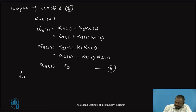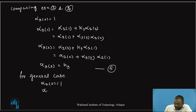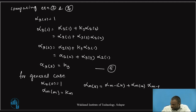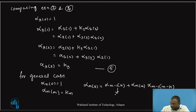For the general case: alpha_m(0) is equal to 1, alpha_m(m) is equal to k_m, and alpha_m(k) is equal to alpha_{m-1}(k) plus alpha_m(m) times alpha_{m-1}(m minus k). Let us call this equation number 6. These are the expressions to convert the m-stage lattice structure coefficients into m-stage direct form filter coefficients.